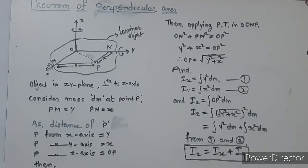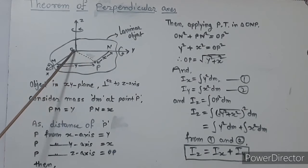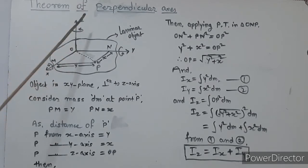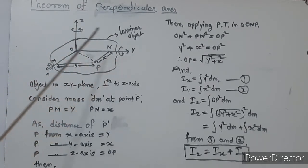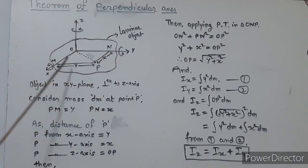So, we consider a body in the XY plane. Here we have the x-axis, y-axis, and z-axis. The body is in the XY plane, and the z-axis is perpendicular to the XY plane — that means z is perpendicular to the body's plane. So the perpendicular axis theorem applies here.